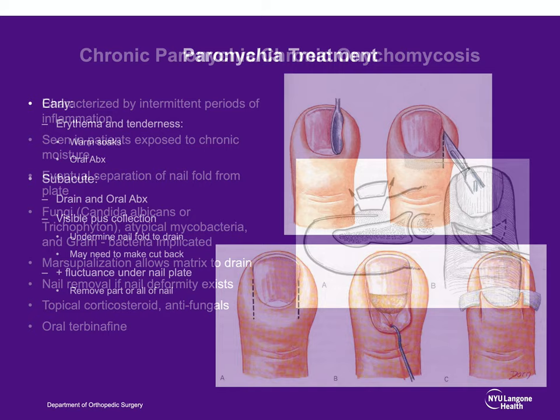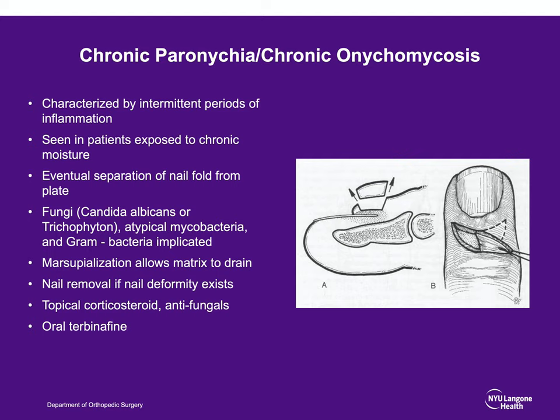A chronic paronychia, or nail plate infection, is often caused by fungal organisms such as Trichophyton or Candida. You also need to consider atypical mycobacteria and gram-negative bacteria. Even with a presumptive fungal infection, these can become superinfected with bacterial infections. Sometimes this can be treated with a topical antifungal agent if it just involves the nail plate. However, if there is chronic induration and separation of the nail fold, the nail plate often needs to be removed, or even a marsupialization procedure to adequately allow the germinal matrix to be decompressed.